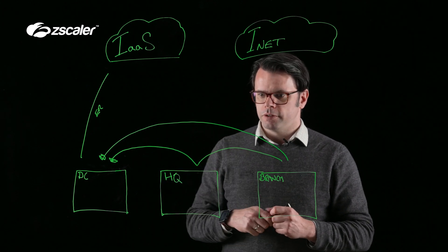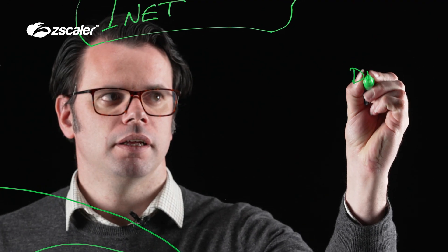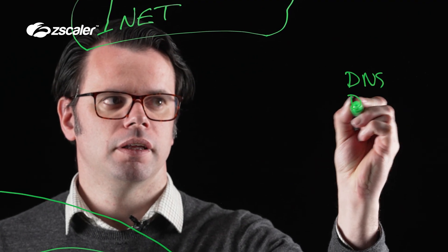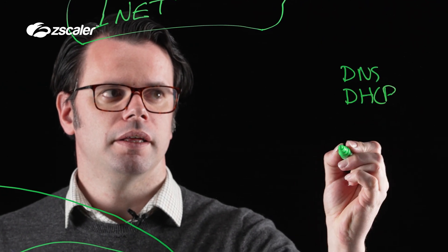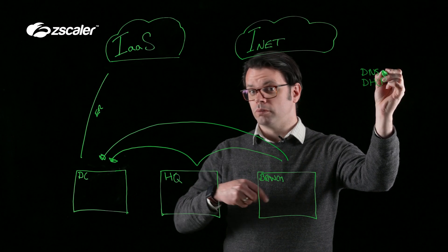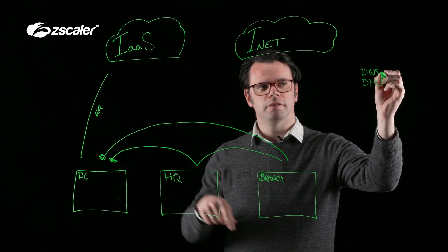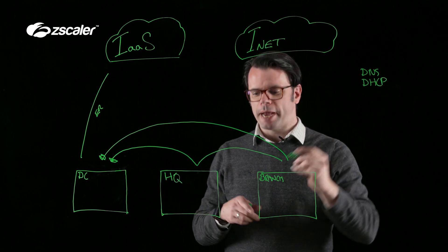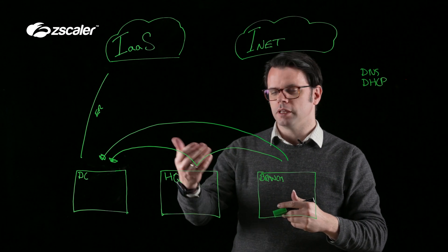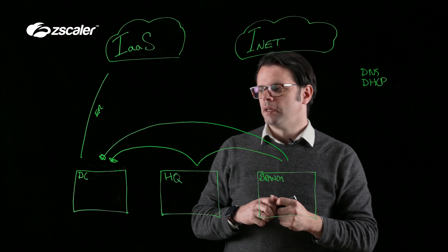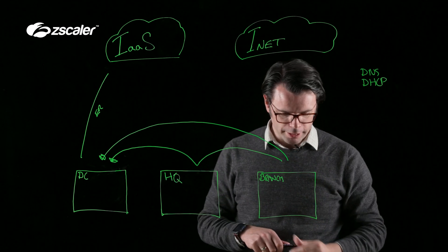On top of all of this, we would obviously need local services — things like DNS, DHCP — that are going to resolve those fully qualified names to the IP addresses we want to go to, and that are going to manage the allocation of IP addresses dynamically as things are joined to the network. So we need to understand how all of this is going to fit together.